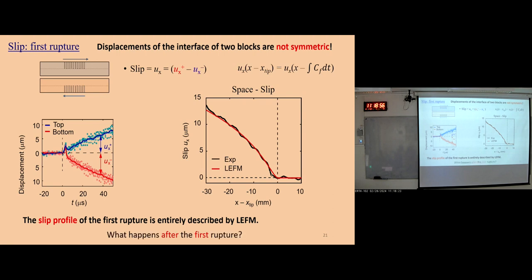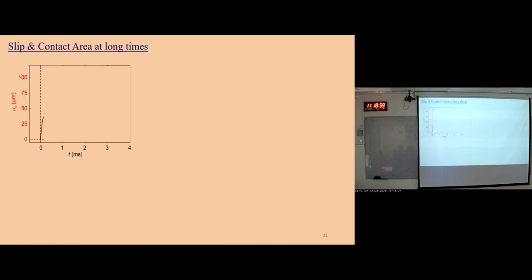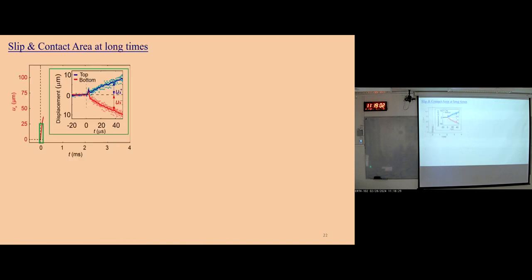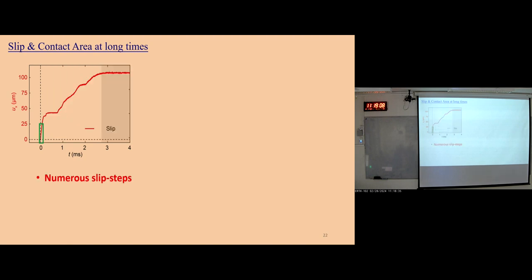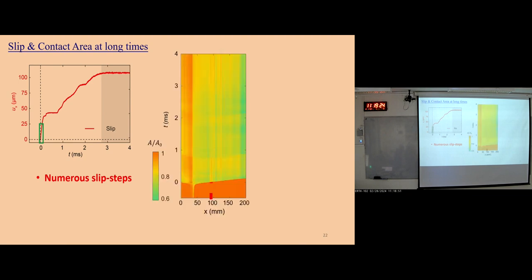But we ask: what happens after the first rupture? We extend the observation from microseconds to milliseconds and find numerous slip steps exist. The slip increases until about three milliseconds, after which the slip stops. At the same time, using our contact area measurement system, we monitor the contact area change. At the first rupture, the contact area drops a lot. But after that, it's pretty weak — you can see some ripples. How do we detect them? We take the localized differential of the contact area view, which reveals all these secondary ruptures.